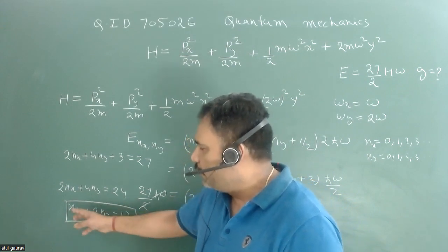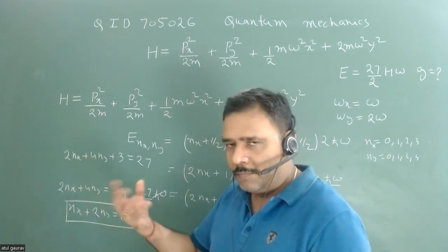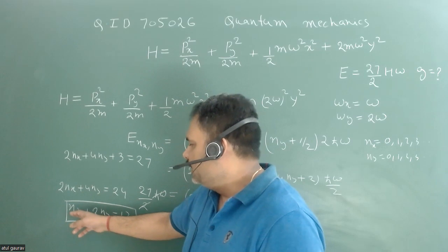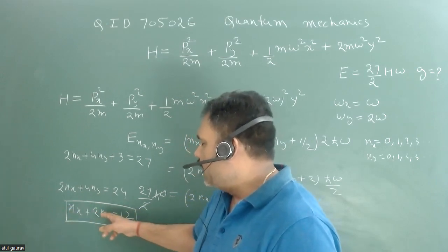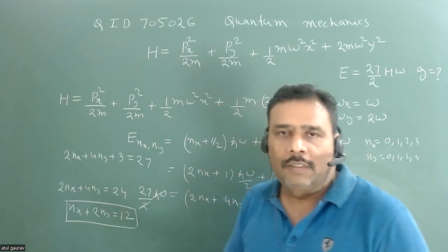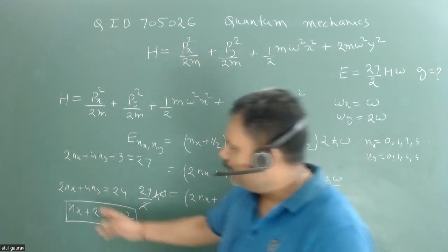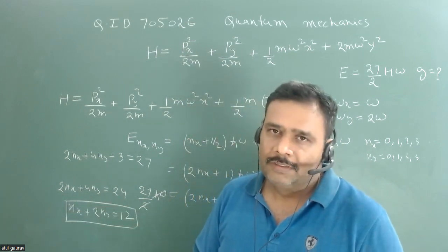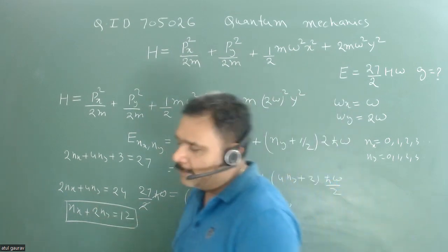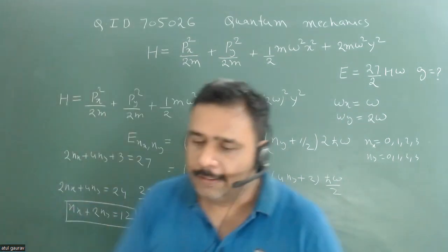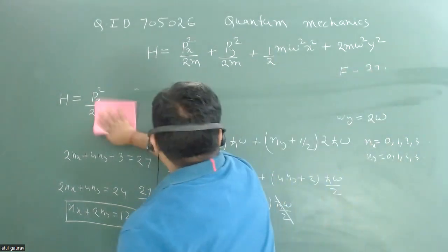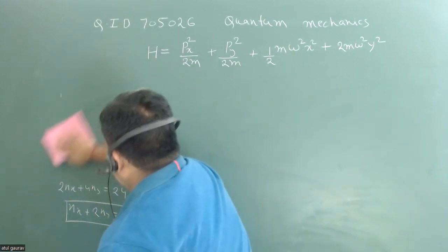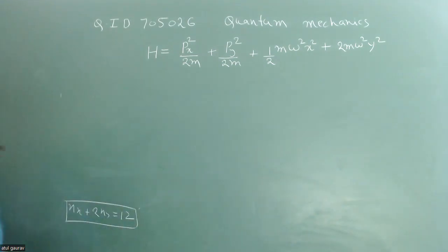An important observation: if nx is odd, then nx + 2ny would be odd, but 12 is even — so nx must always be an even number. This is one of the beautiful constraints of this problem. With this insight, we can now systematically calculate the degeneracy.